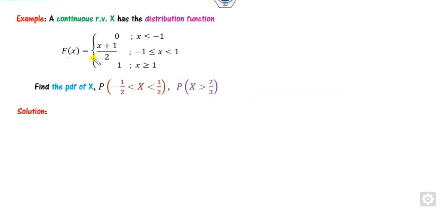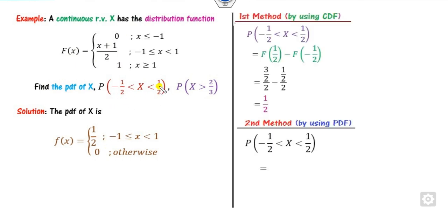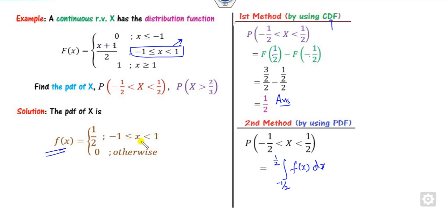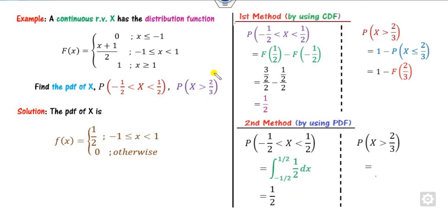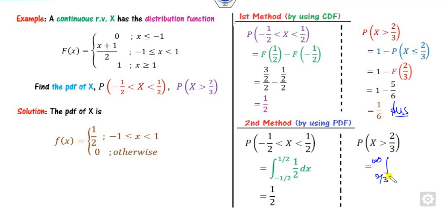Look at one more Type 1 example. Again, the CDF is given; take derivatives to get the PDF: 0, 0, then 1/2. For the first probability, using the CDF: F(b) − F(a). Where does 1/2 lie? Substitute to get 1/2 + 1/(something). Where does −1/2 lie? Substitute and get the answer. For the PDF method, integrate from −1/2 to 1/2 over the relevant piece. For P(X > 2/3): rewrite as a complement; 2/3 lies in the case giving CDF = 2/3 + 1/2, and integrating from 2/3 to 1 for the PDF method.